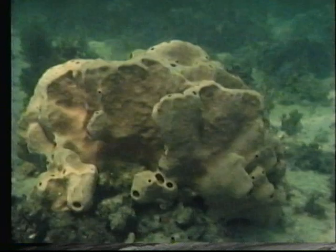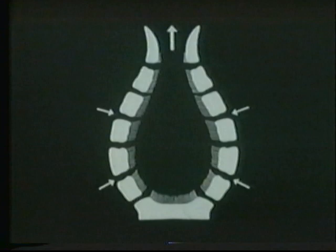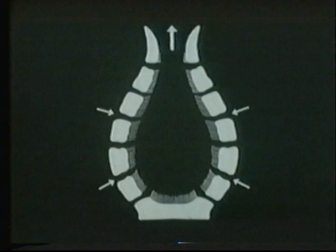Sponges draw water currents in through the pores. The water leaves through an opening at the top of the sponge. Cells lining the body cavity extract food and oxygen from the water. The sponge's body is supported by spicules of silica, calcium carbonate or protein.